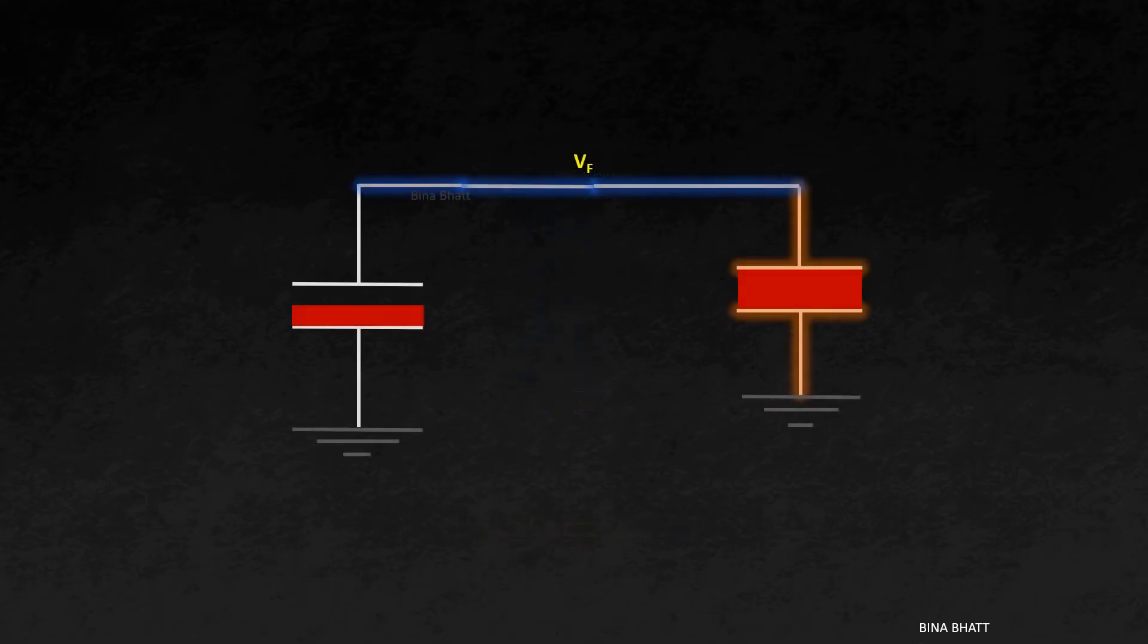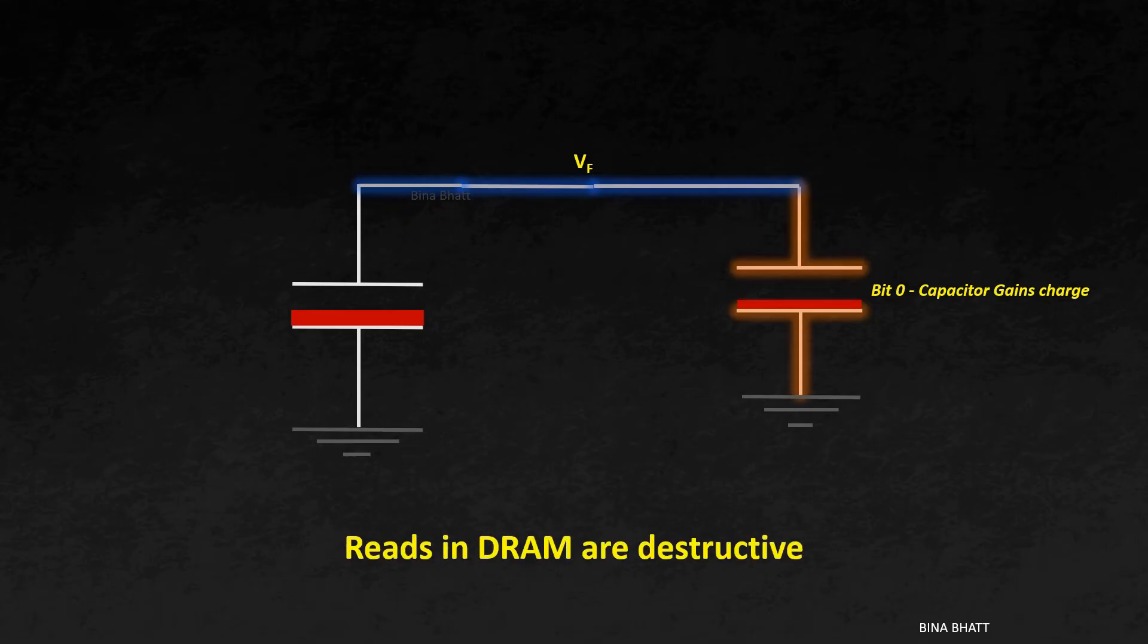During the charge sharing process, there is a change in the charge of the cell capacitor as seen here. The capacitor loses charge when it contains a 1 and it gains charge when it contains a 0. Either way, the charge gets disturbed during the read operation. Thus, reads in DRAM are destructive.